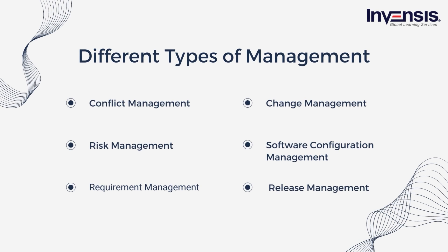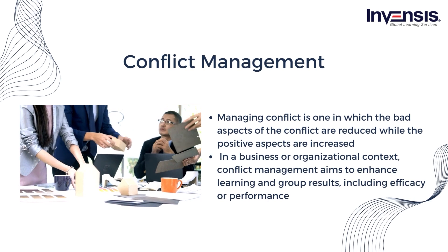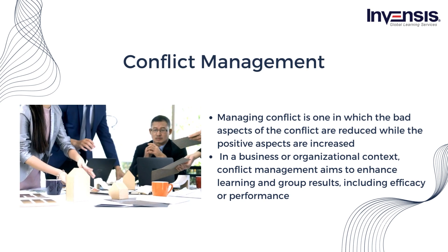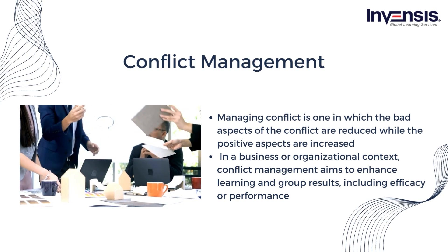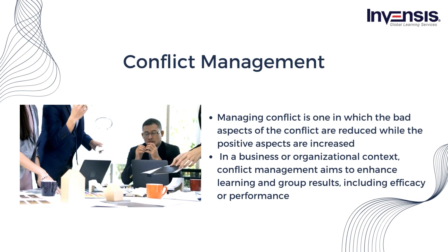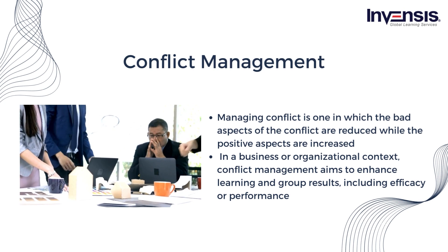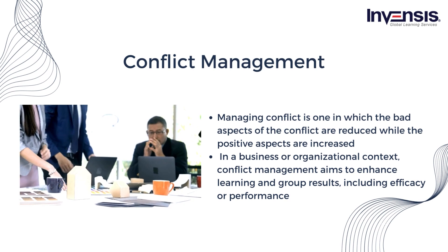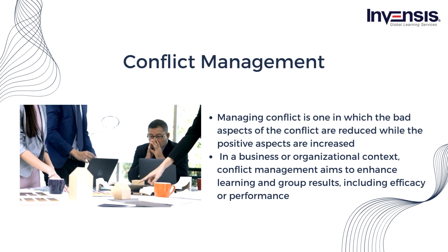Software project management consists of several different types of management. The first is conflict management, in which the bad aspects of conflict are reduced while the positive aspects are increased. In a business or organizational context, conflict management aims to enhance learning and group results, including efficacy or performance. The outcomes of collective efforts can be improved by effective conflict management.